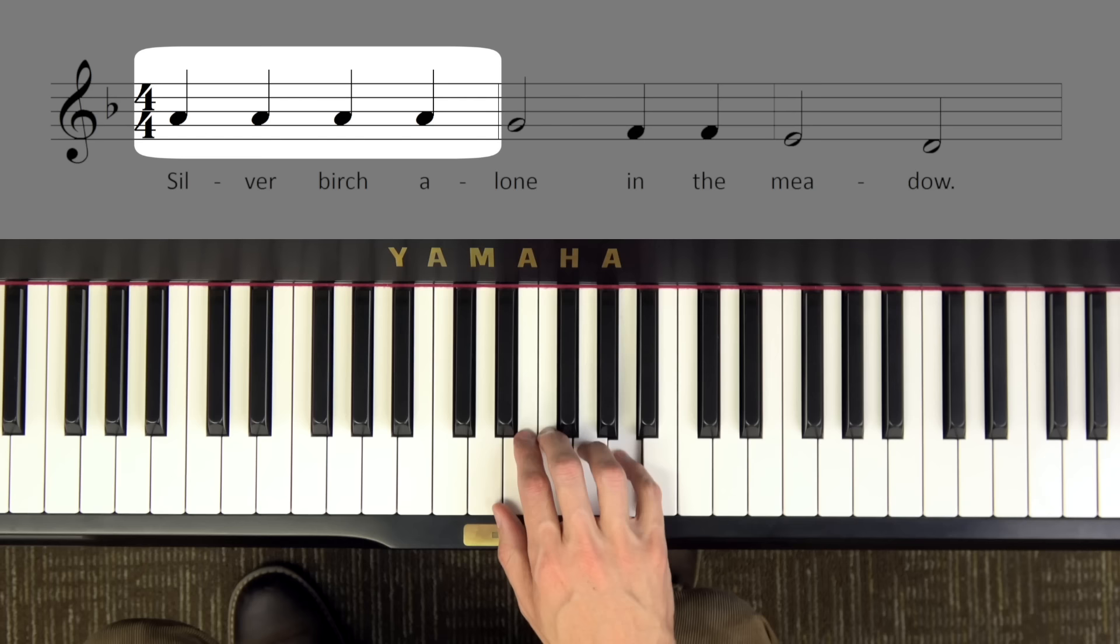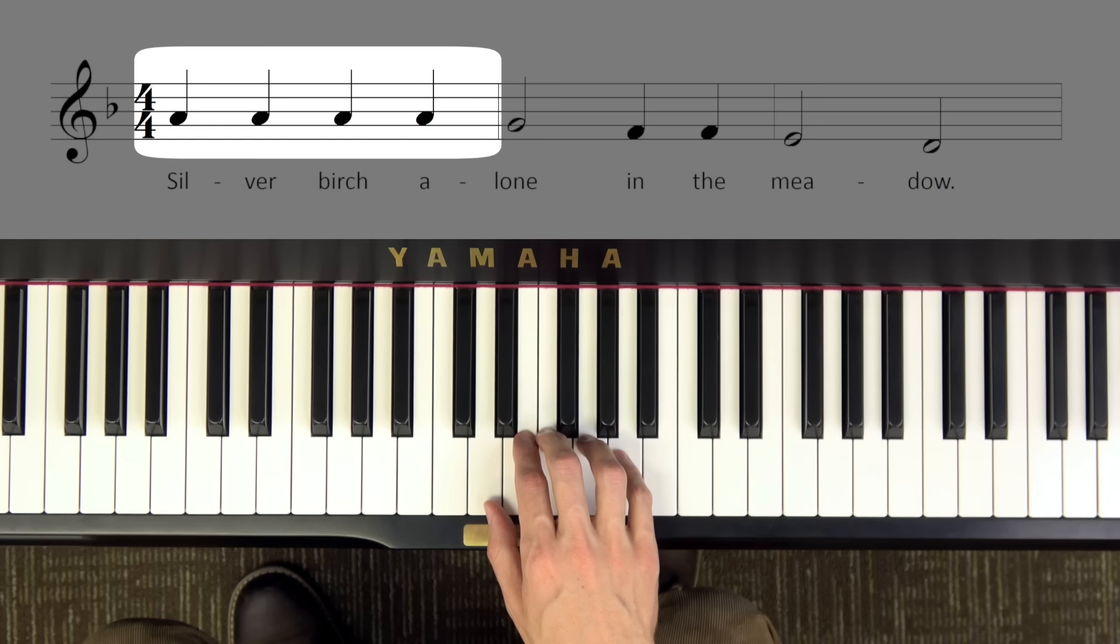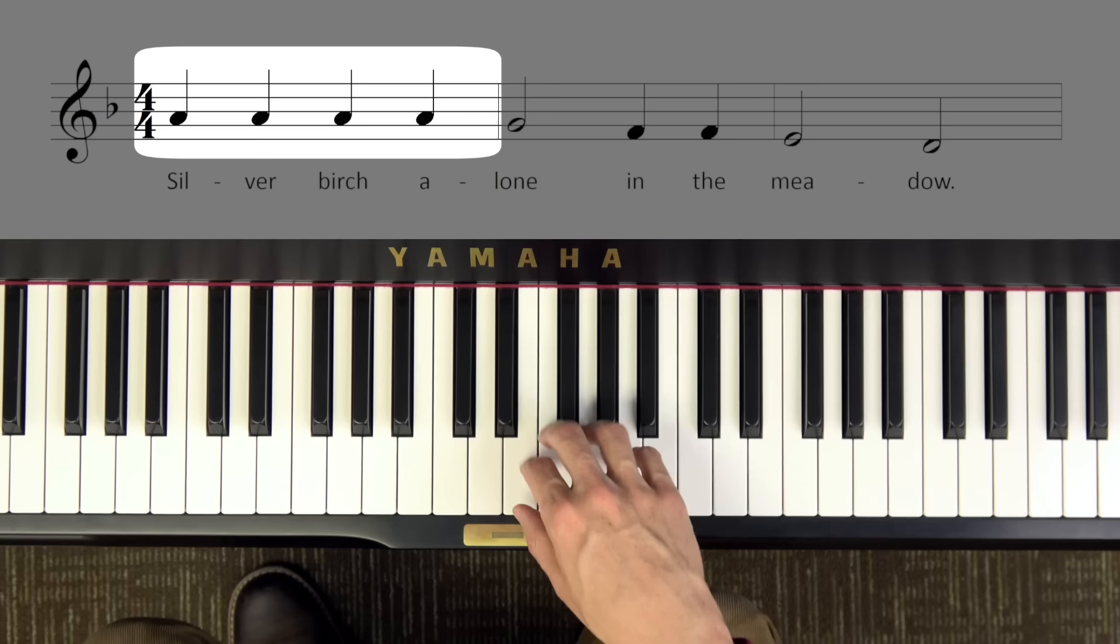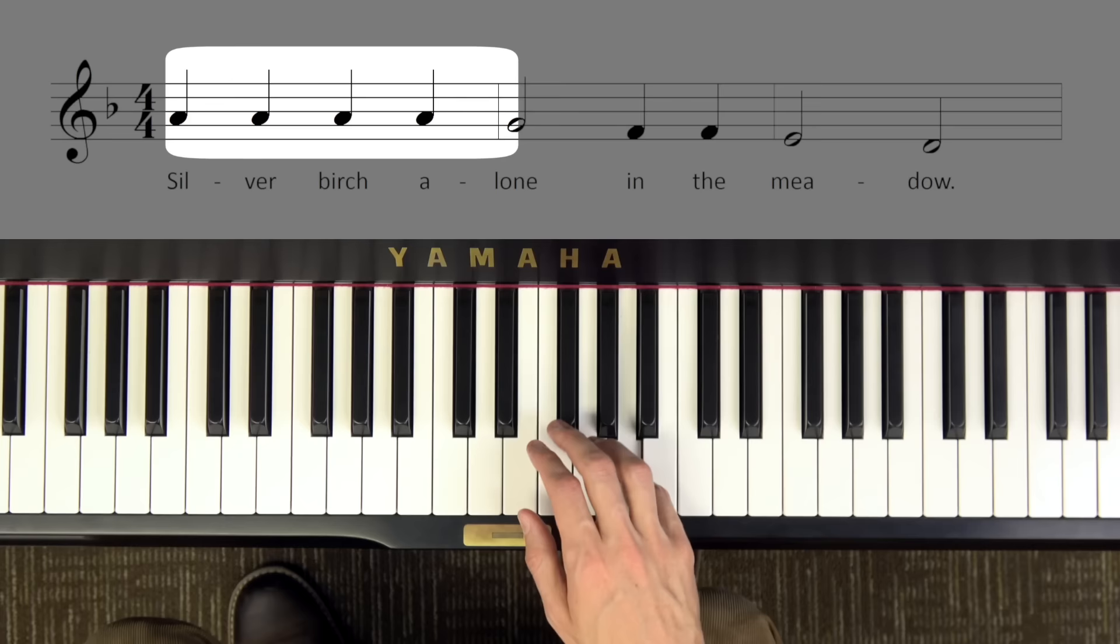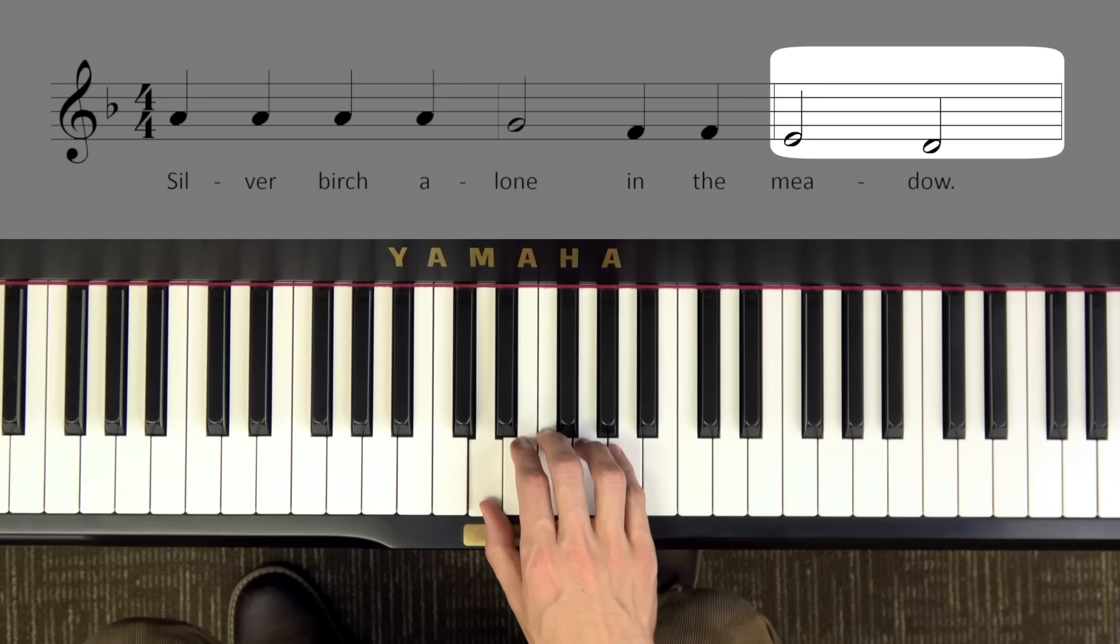Now, you'll see that the first note as we said is A, and I'll sing and play this once for you in solfège, and then I'll give you a turn to try it. So on this first phrase we have SO SO SO SO FA ME ME RE DO. Remember that in minor instead of MI we say ME.